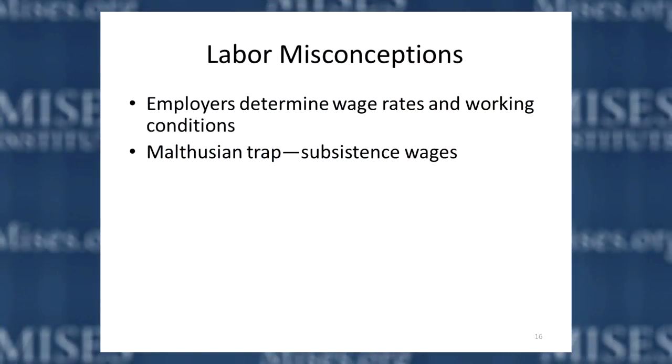People still hold the idea of the Malthusian trap — after Thomas Robert Malthus, who said that any increases in wages would lead workers to eat more and have more children, driving wages back down to subsistence. But subsistence in Malthus' day was far lower than today. Even people on welfare today are so much better off than the king of England during Malthus' time — they have automobiles, TVs, cell phones. The lowest income earners in the United States have long since broken free of the Malthusian trap.